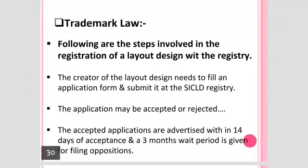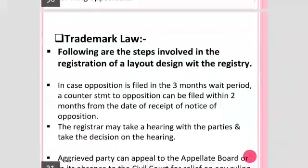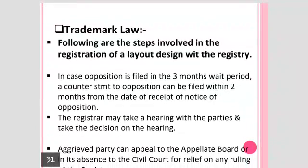The following are the steps involved in the registration of a layout design with the registry. The creator of the design needs to fill an application form and submit it at the SICLD industry registry. The application may be accepted or rejected. Accepted applications are advertised within 14 days of acceptance, and a three-month wait period is given for filing opposition.